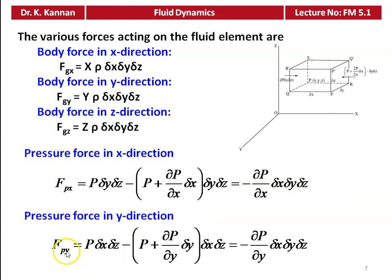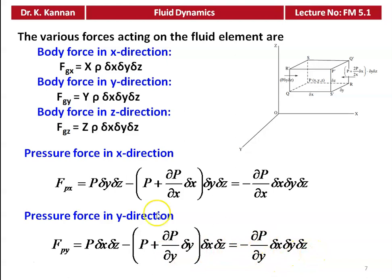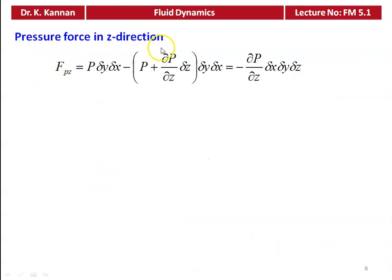Similarly in the y direction: Fpy = P·δx·δz − (P + ∂P/∂y · δy)·δx·δz = −∂P/∂y · δx·δy·δz. And in the z direction: Fpz = P·δy·δx − (P + ∂P/∂z · δz)·δy·δx = −∂P/∂z · δx·δy·δz.